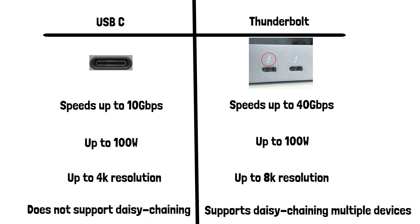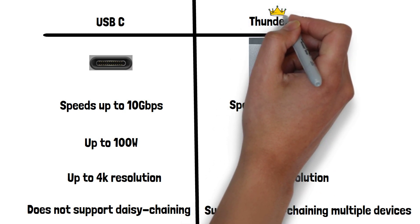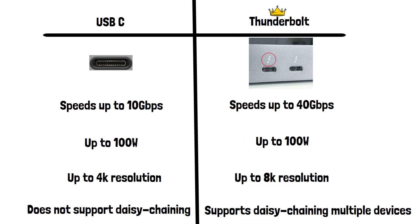In summary, while both USB-C and Thunderbolt use the same physical connector, Thunderbolt offers significantly higher data transfer speeds, better video output capabilities, and daisy-chaining support, making it the superior option if your device supports it.